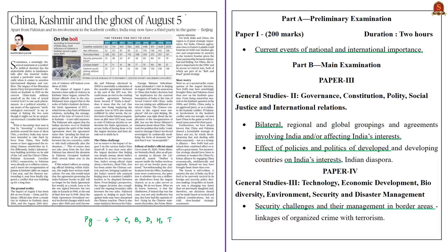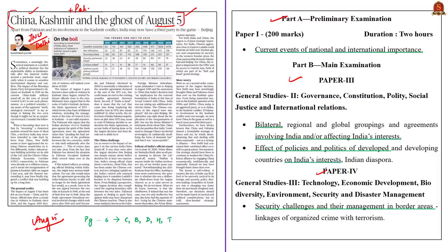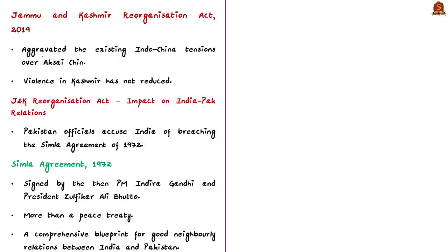Let us take up this lead column from the editorial page. The author, who teaches at Jawaharlal Nehru University in Delhi, analyzes the impact of the Jammu and Kashmir Reorganization Act of 2019 on India's border problem with both Pakistan and China. This bill was introduced on August 5th, which is why the author has named the topic as 'China, Kashmir, and the Ghost of August 5th.' The author begins by saying that the J&K bifurcation has aggravated the existing India-China tensions over Aksai Chin.